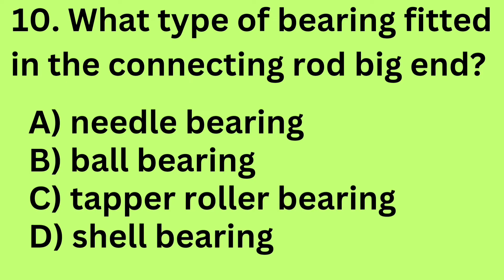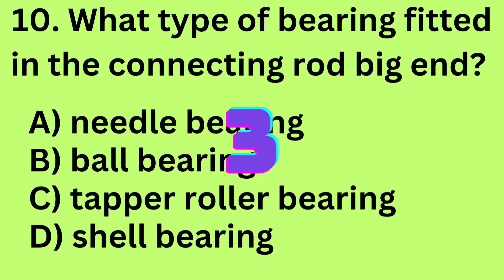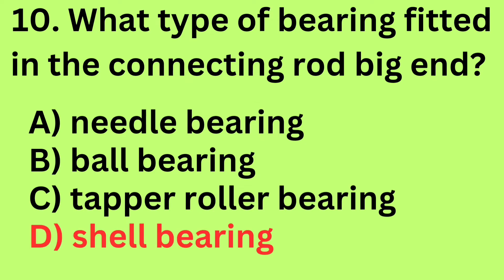Question 10: What type of bearing is fitted in the connecting rod big end? A. Needle bearing, B. Ball bearing, C. Tapper roller bearing, D. Shell bearing. Answer: D. Shell bearing.